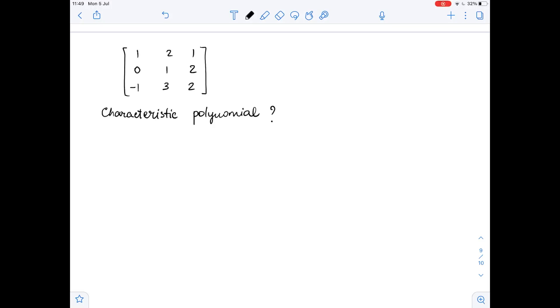We need to find the characteristic polynomial of the given matrix. Let's call it matrix A. First, we will write down that A minus lambda times I equals A